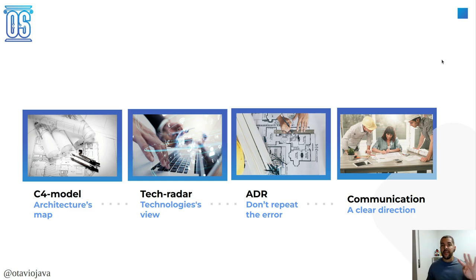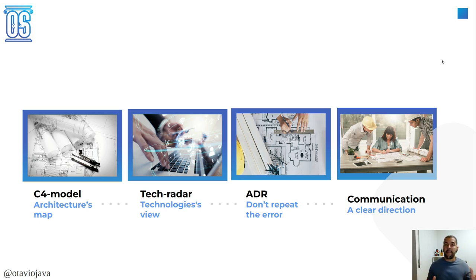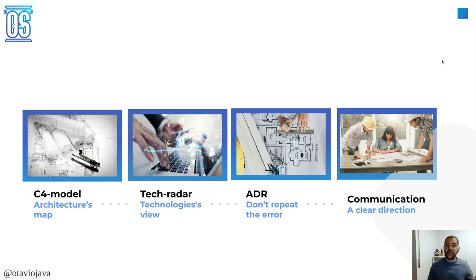We have four kinds of documentation. The first one is the C4 model, where you can imagine a Google map of your software architecture. The second one is the Tech Radar, where I map the new technologies that I have. The third one is ADR — Architecture Decision Record — where the main goal is to not repeat the same mistake twice; I receive a decision and analyze it by trade-off. The last one is clear communication and forums.